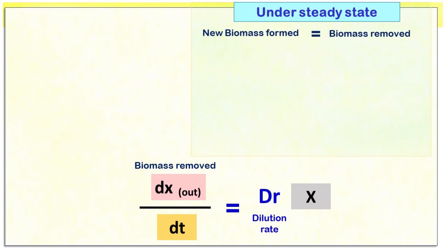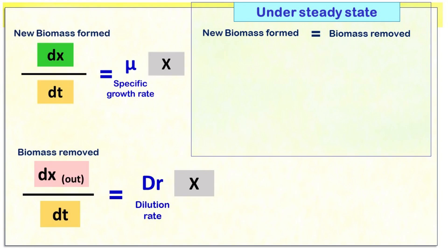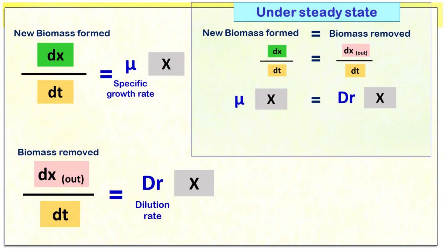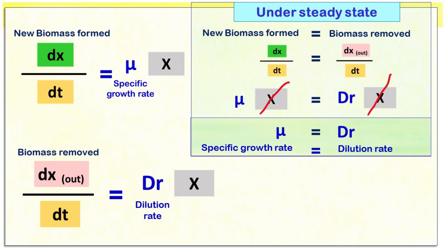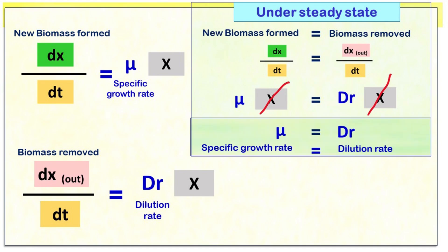Under steady state, the amount of new biomass formed equals the amount of old biomass removed. Substituting this condition, we get: dilution rate DR is equal to mu. So the dilution rate equals the growth rate. This is one of the most important equations for continuous culture.